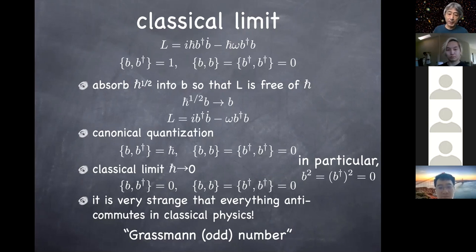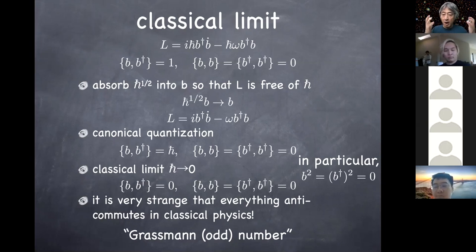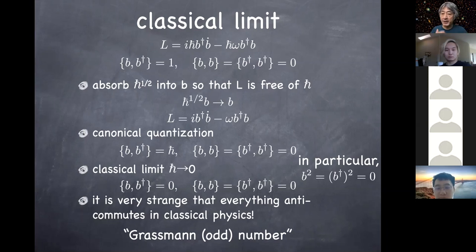To recap: we chose anti-commutation relations to describe fermions, and verified that it works. But b and b-dagger have a classical limit where they become numbers — weird numbers called Grassmann odd numbers, where reversing the product order gives a minus sign and squaring any one of them gives identically zero. These numbers exist in a mathematically consistent fashion.